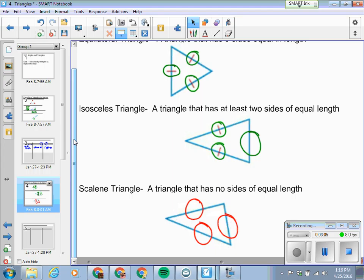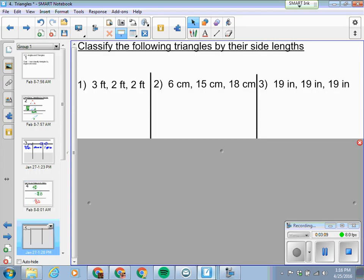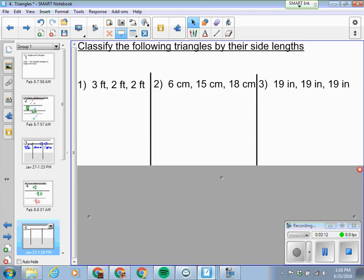And then a scalene triangle, a triangle has no sides of equal length. There's nothing indicated, nothing marked on here. Therefore, it's a scalene triangle.